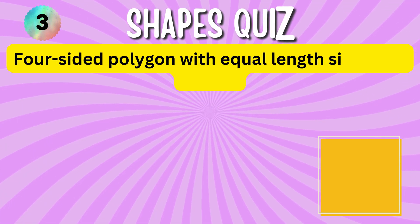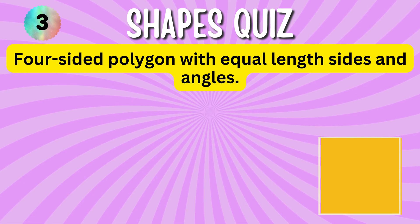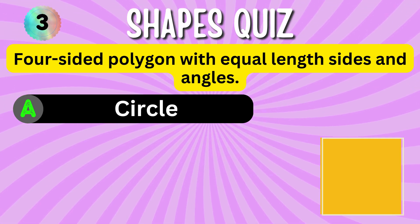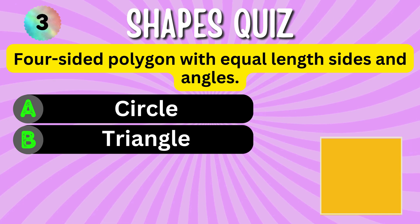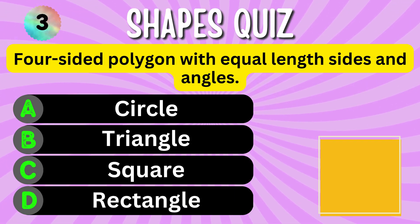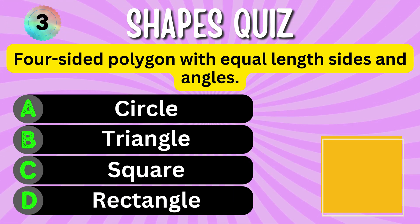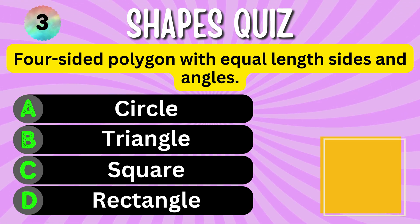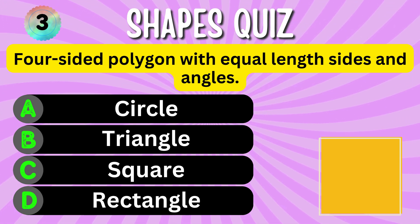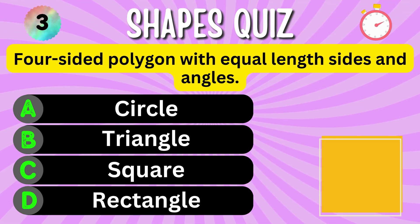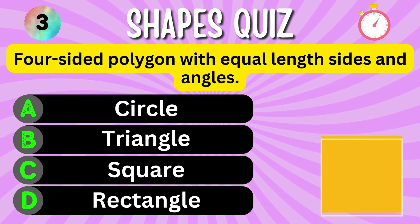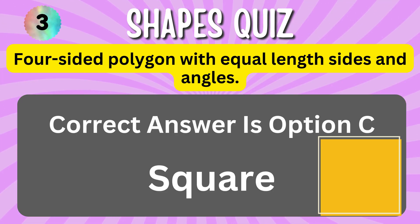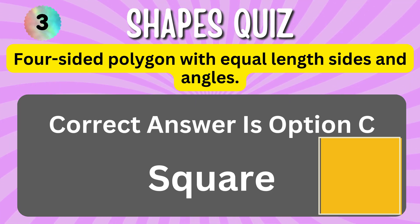Four-sided polygon with equal length sides and angles. Option A. Option B. Option C. Option D. You have 5 seconds to choose the correct answer. Your time starts now. The correct answer is Option C, Square.